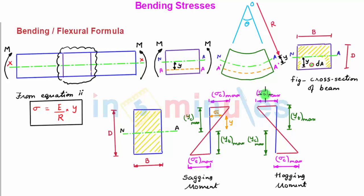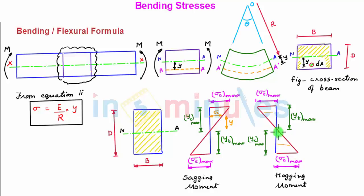If we know the maximum tensile stress and maximum compressive stress, and if we know the dimensions of the beam, we can determine the compressive and tensile stress at any section of the beam using the similarity of triangles equations.